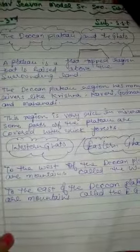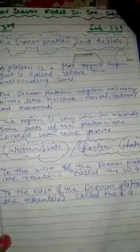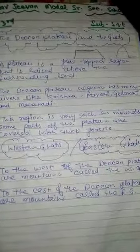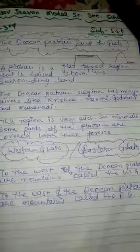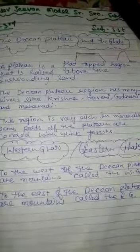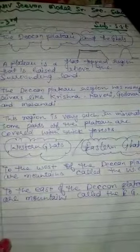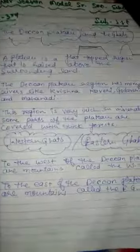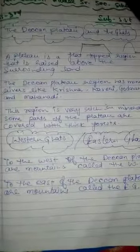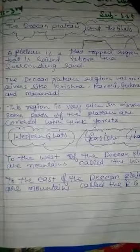To the west of the Deccan Plateau are mountains called the Western Ghats, and to the east of the Deccan Plateau are mountains called the Eastern Ghats. Okay, I am showing you these things on the map.